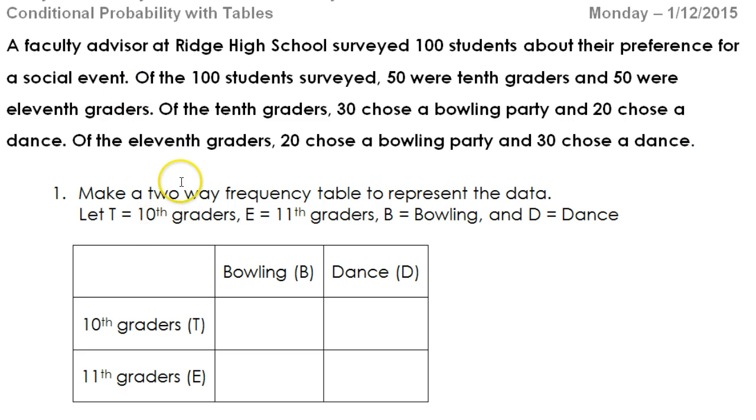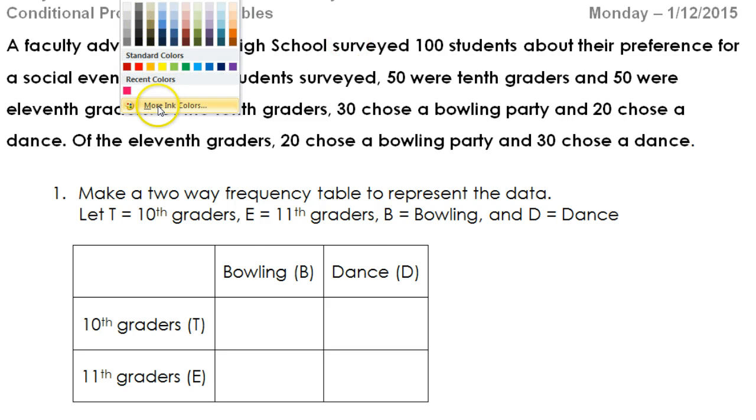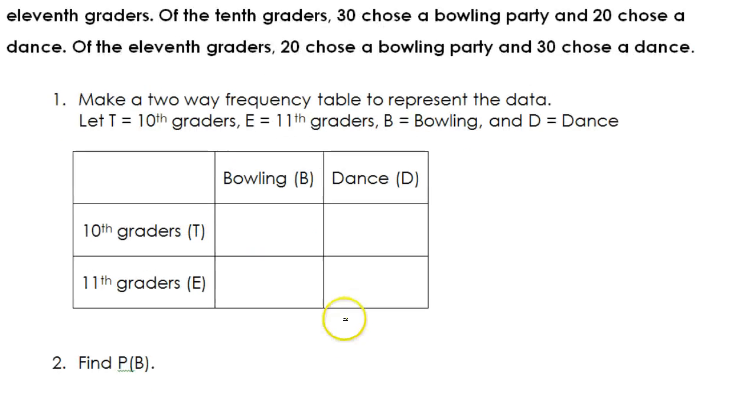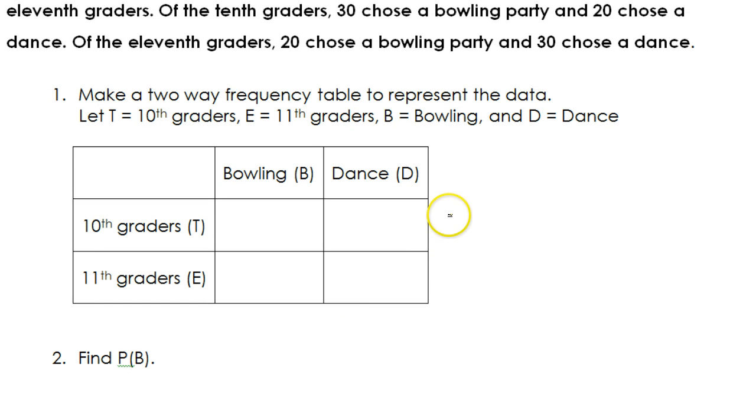For example, a faculty advisor at Ridge High School surveyed 100 students about their preference for a social event. Of the 100 students surveyed, 50 were 10th graders and 50 were 11th graders. So let's go ahead and organize this information into a chart. 50 were 10th graders, I'm going to record the totals on the outside, so 50 were 10th graders and 50 were 11th graders. These are totals out here.